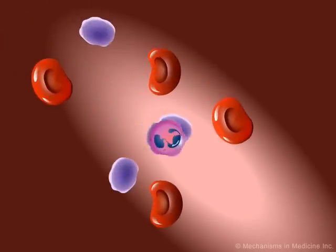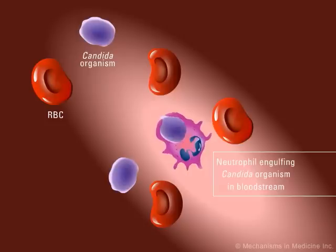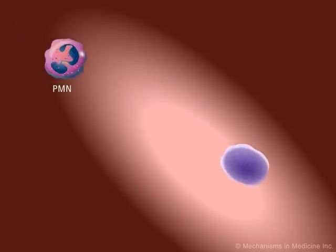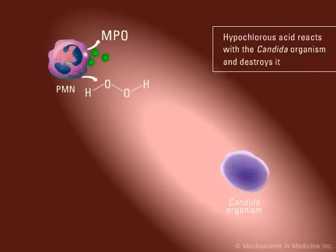A similar situation may occur in the lungs where Candida organisms will invade if not held in check by neutrophils. Candida organisms that have gained access to the bloodstream are phagocytized by neutrophils and eventually killed. Organisms are killed within the neutrophil through the release of myeloperoxidase, an enzyme elaborated by the neutrophil, as well as the production of hydrogen peroxide. Hydrogen peroxide reacts with chloride in the presence of the myeloperoxidase catalyst, and the reaction produces hypochlorous acid.